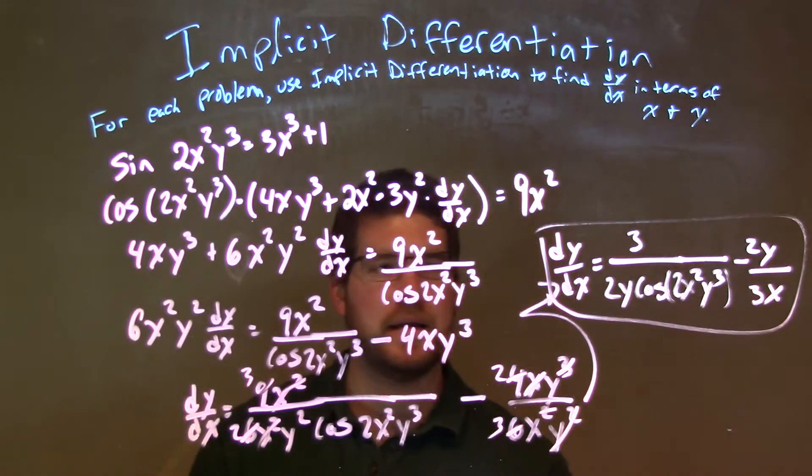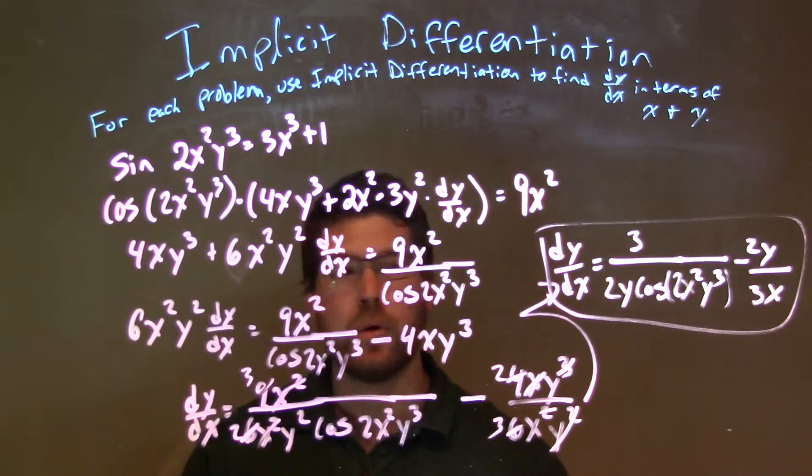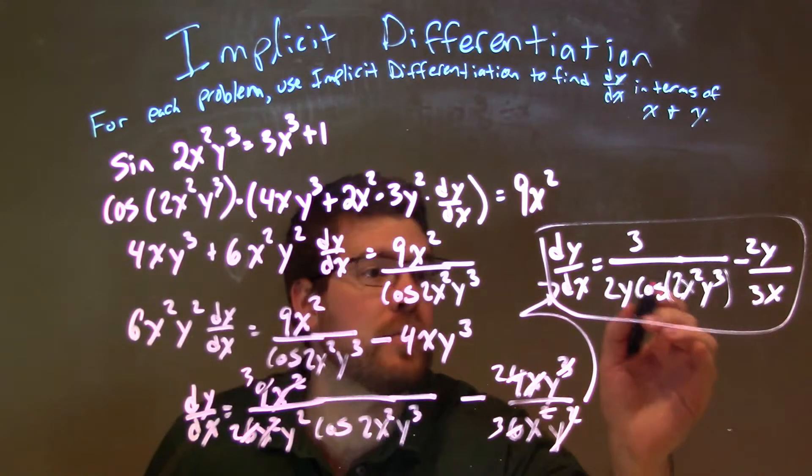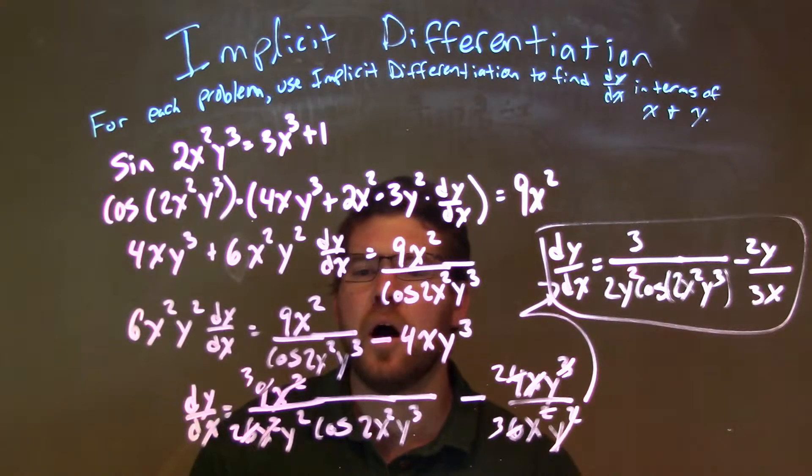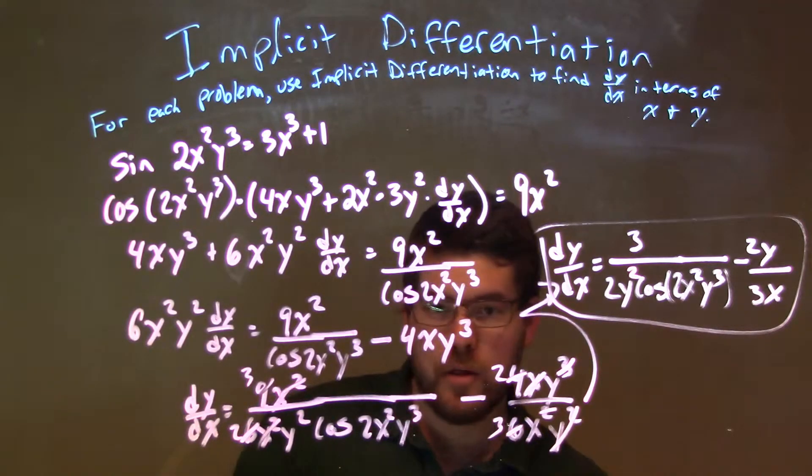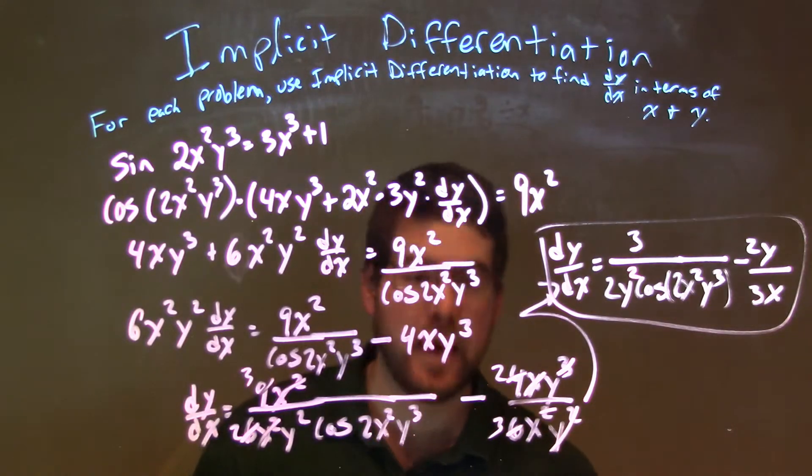So we have our final answer of dy/dx equals 3 over 2y squared cosine of 2x squared y cubed minus 2y over 3x.